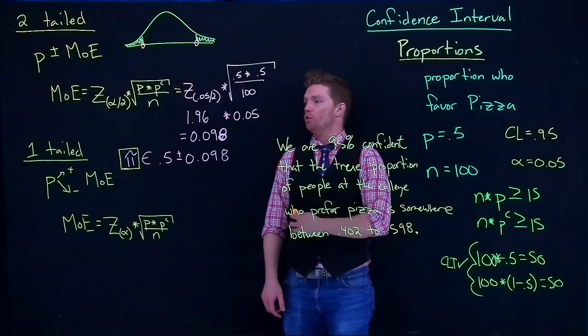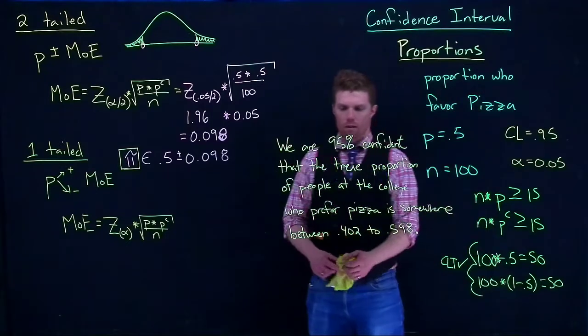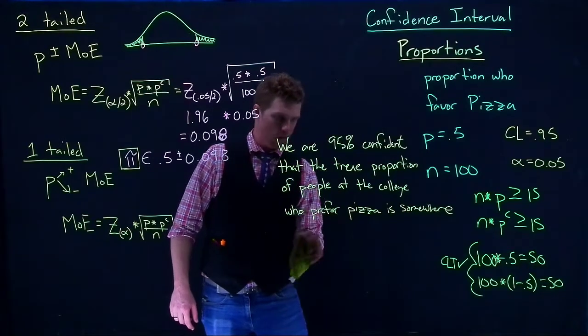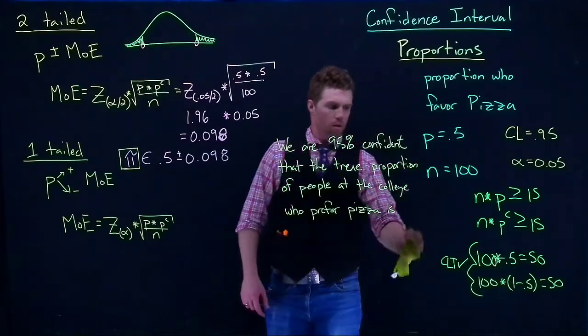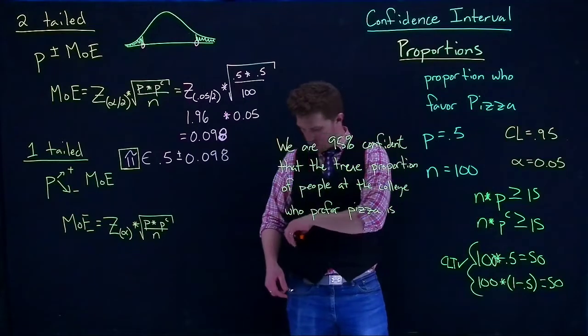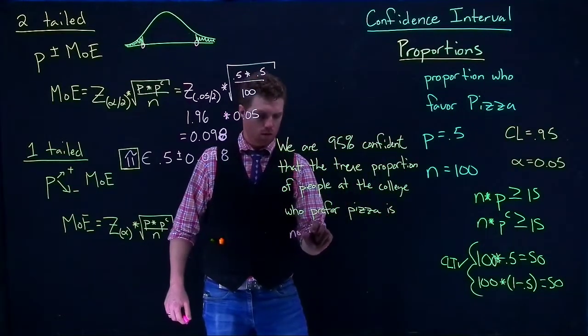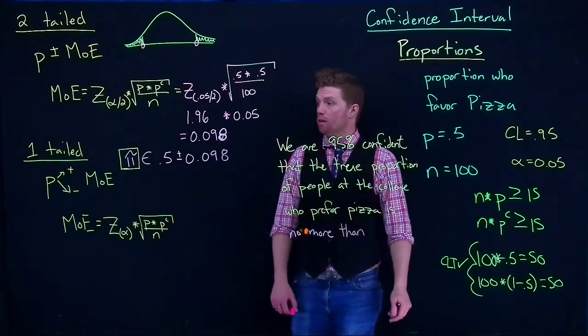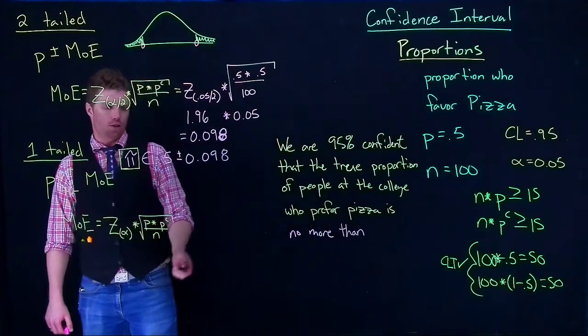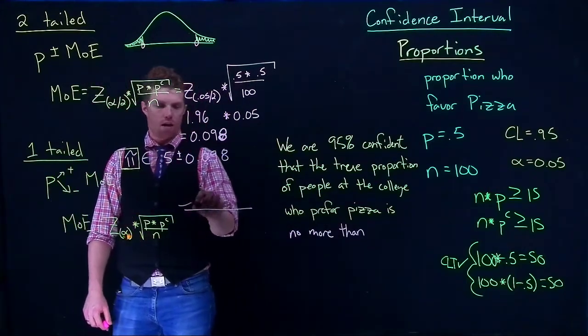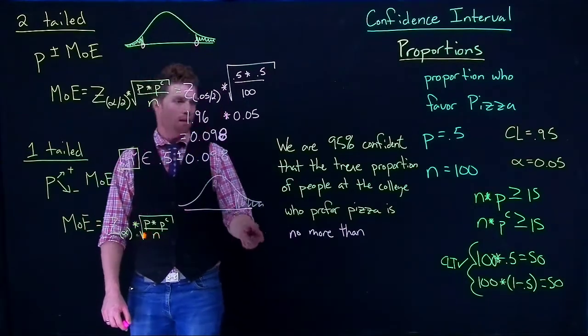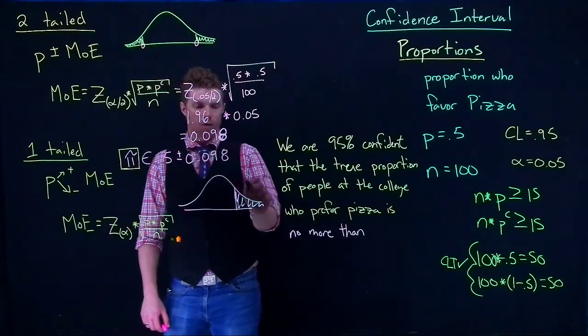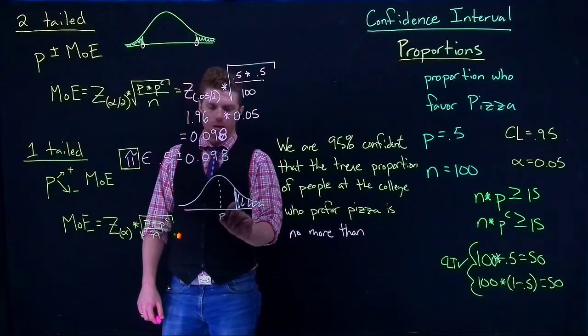Let's look at what we need to do for doing a one-tailed example. If I change my confidence interval statement just a little bit, let's start off with no more than. If we're doing no more than, we know that we want to do this p plus, because graphically here's what I'm trying to do. I'm trying to throw all of my error onto this top end and say that I'm 95% confident the true proportion of people at the college who prefer pizza is no more than this part. It might be less, but it's no more than this value. And so that is above our p, so we need to go p plus.